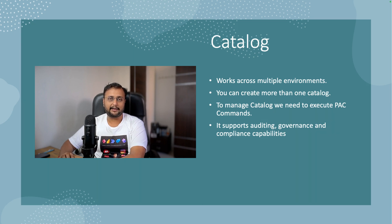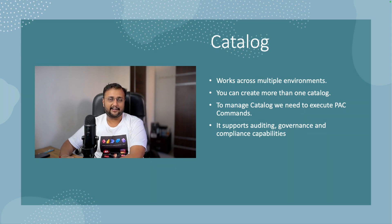You can create more than one catalog as well. For example, if your organization has different business units and you want different catalogs for different views, you can create them. To manage the catalog at this moment, you need to use PAC CLI, and it supports native auditing, governance, and compliance capabilities as well. That's the basic introduction to the Catalog — now let's get into the detailed demo where we add a solution to the catalog and other users consume it.